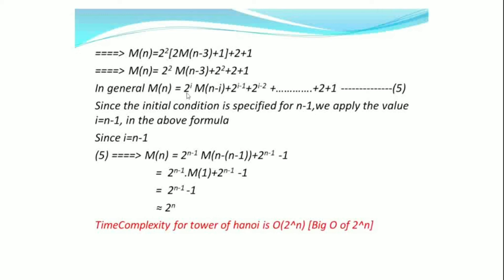In general, m(n) = 2^i · m(n-i) + 2^(i-1) + 2^(i-2) + ... + 2 + 1. Since the initial condition is specified for n = 1, we apply i = n-1 in the above formula. This gives m(n) = 2^(n-1) · m(n-(n-1)) + 2^(n-1) - 1, which equals 2^(n-1) · m(1) + 2^(n-1) - 1. Since m(1) = 1, we get 2^(n-1) - 1, which is approximately 2^n. Therefore, the time complexity for Tower of Honor is O(2^n).